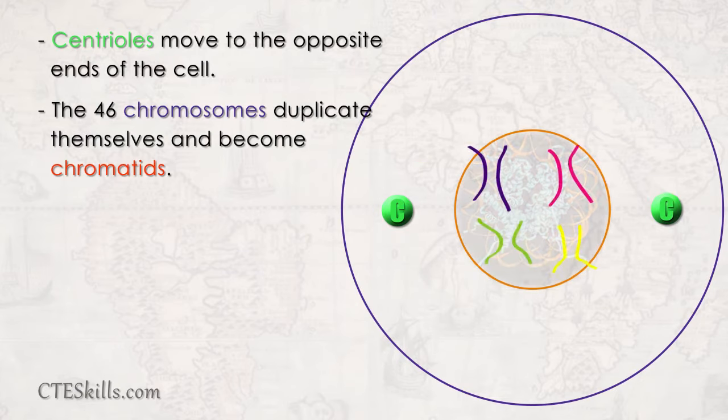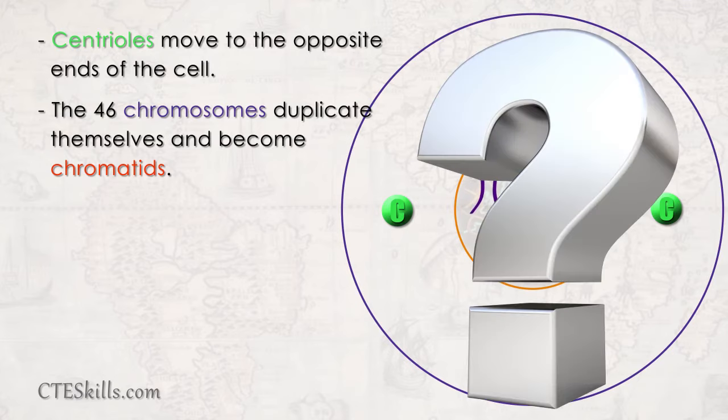Meanwhile, the chromosomes have been ordered to duplicate themselves. Once again, science doesn't quite understand how this happens yet, but maybe soon they will.